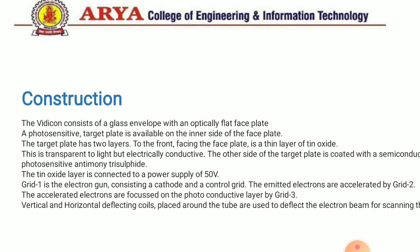The Vidicon consists of a glass envelope with an optical flat face plate. A photo resistive target plate is available on the inner side of the face plate. The target plate has two layers: the front layer facing the face plate is a thin layer of tin oxide, which is transparent to light but electrically conductive. The other side of the target plate is coated with a semiconductor photo sensitive antimony trisulfide.